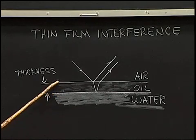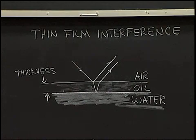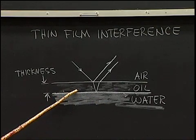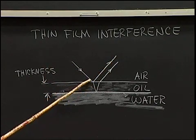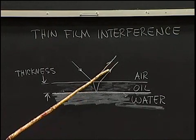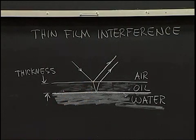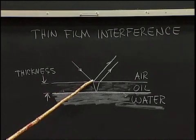Here I have a diagram showing a thin film, such as a film of oil on top of a puddle of water, such as we might find in a parking lot. White light comes down and one beam reflects from the top surface; another beam goes through that thin film and reflects from the bottom surface of that thin film and goes back up and meets the top beam. Those two beams will be either in phase or out of phase depending upon four variables: the thickness of the film, the wavelength of light, the index of refraction of the film, and the angle at which you observe this.